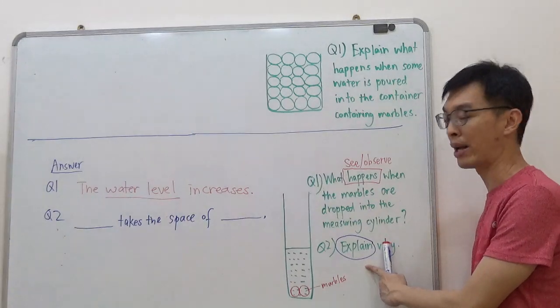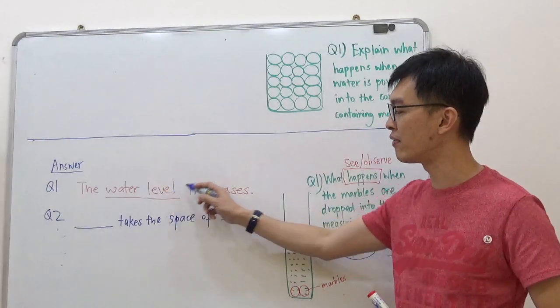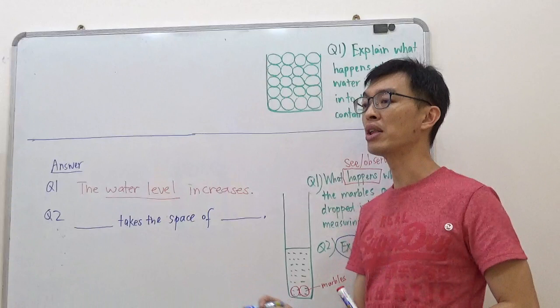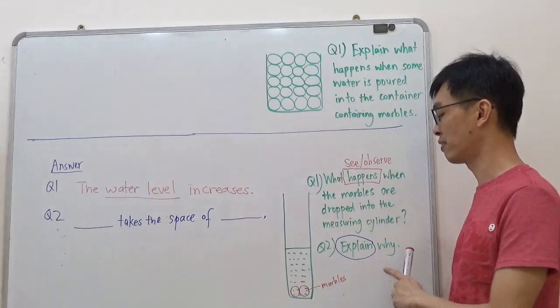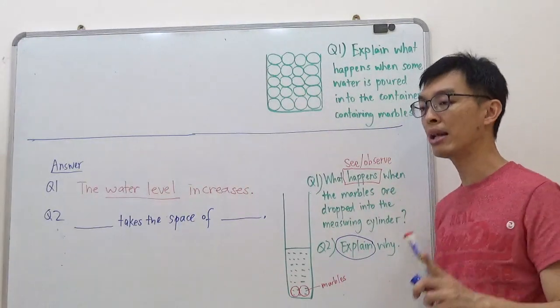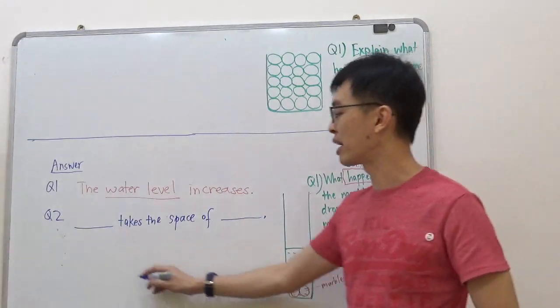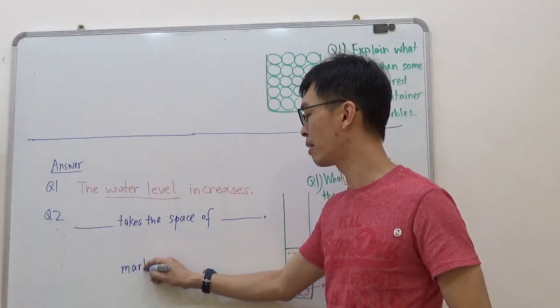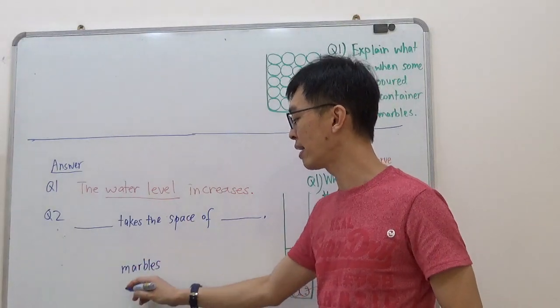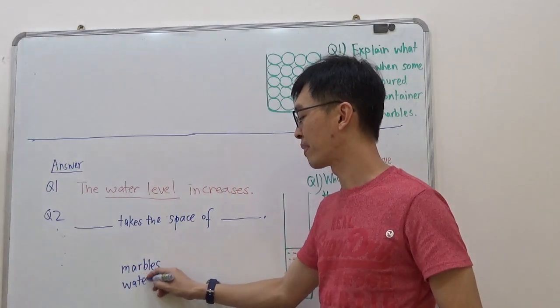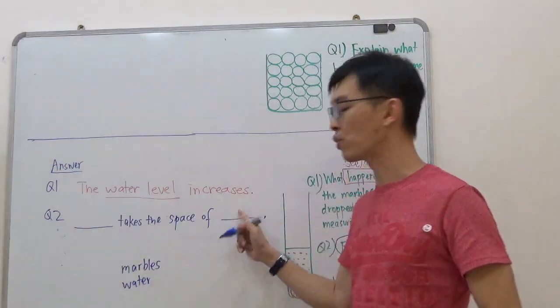They ask you to explain. Explain what? Explain why the water level increases. Now, the water level increases because of the marbles, you will tell me. Now, remember, in this diagram, what are the two items that you see inside the measuring cylinder? You will tell me, yes, teacher, I know. These are marbles and water. Now, use these two words fill into these two blanks.